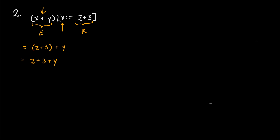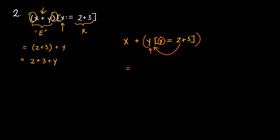An important note here is the significance of the parentheses around the E expression. If we had not put those brackets around E, we would have X plus Y with the substitution X replaced with Z plus 3 applying only to the expression Y — and there are no X's in Y, so the substitution does nothing. The final result would end up being X plus Y, which is very different from the answer we got. So it's always important to pay attention to where you place the brackets around your expression.